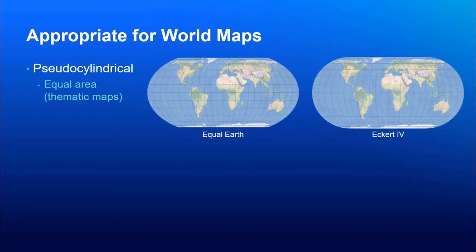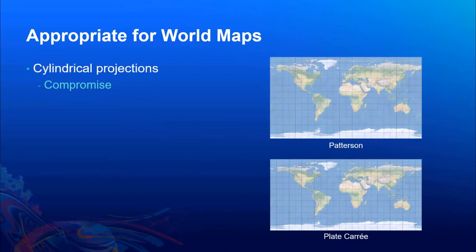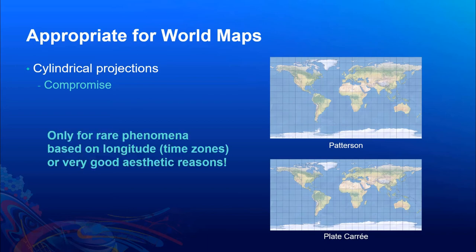So, what would be appropriate for world maps? Some sort of pseudo-cylindrical, particularly like equal area for thematic maps, like an Equal Earth or an Eckert IV. That's the case where you're doing some sort of thematic mapping. If you're doing more of a general map, then a compromise projection like Robinson or Winkel Tripel could be more appropriate. Robinson and Winkel Tripel were both used for world maps by National Geographic. In some cases, you may be restricted to use an actual rectangular-shaped map. In that case, you want to use some sort of compromise projection like Patterson, or in a pinch, Plate Carrée, which is not really a compromise. But again, if you're doing it for aesthetic reasons or for some sort of rare phenomena like time zones, then sometimes this very simple style map can be the most useful.